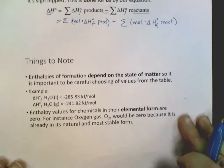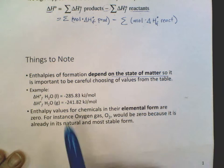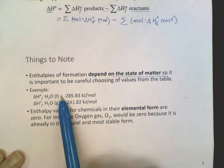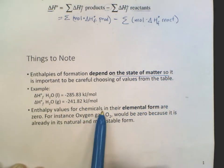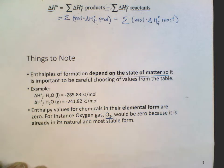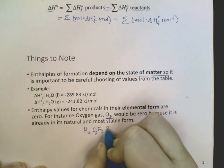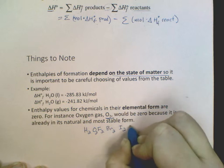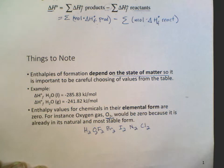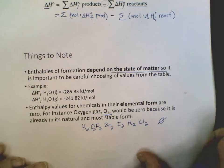Enthalpies of formation depend on the state of matter, so be careful choosing values from the table. Enthalpy values for chemicals in their elemental form are zero — for instance, O2 is zero because it's already in nature in that stable form. Common ones to remember are the diatomic elements: H2, O2, F2, Br2, I2, N2, and Cl2 — all would be zero for their delta H value. Any solid metals would also be zero.